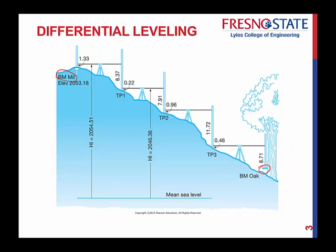In the process of doing this, we run what's considered a loop. You set up in the middle and transfer an elevation to what are called turning points — temporary points, something fixed, that we don't really care about permanently, because really we only care about the elevation down at the endpoint. You set up, transfer elevation to TP1, then set up again, come to turning point 2 and establish an elevation there, then turning point 3. Once you know that elevation, you add your backside reading, get a foresight reading, and establish exactly what that elevation is.